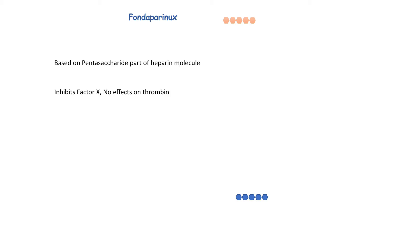Fondaparinux is a synthetic molecule based on the pentasaccharide sequence of the heparin molecule. Because it consists only of this pentasaccharide sequence, it is expected to have only anti-Factor Xa activity and will not affect thrombin.